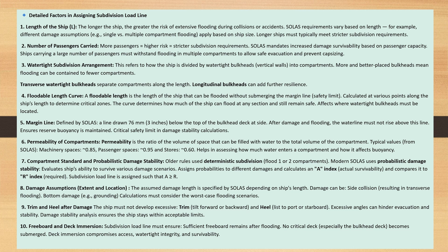Factor 6: Permeability of compartments. Permeability is the ratio of the volume of space that can be filled with water to the total volume of the compartment. Typical values from SOLAS are: machinery spaces 0.85, passenger spaces 0.95, and stores 0.60. This helps in assessing how much water enters a compartment and how it affects buoyancy.